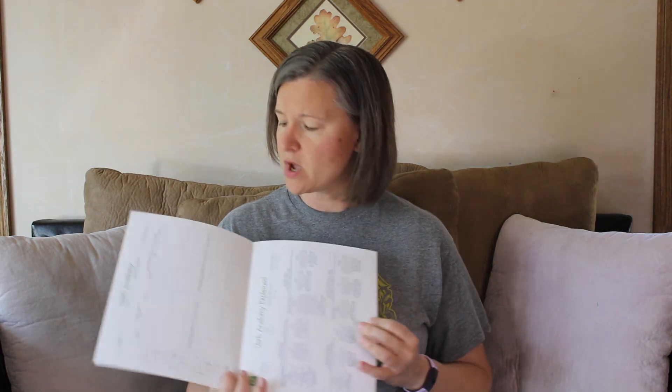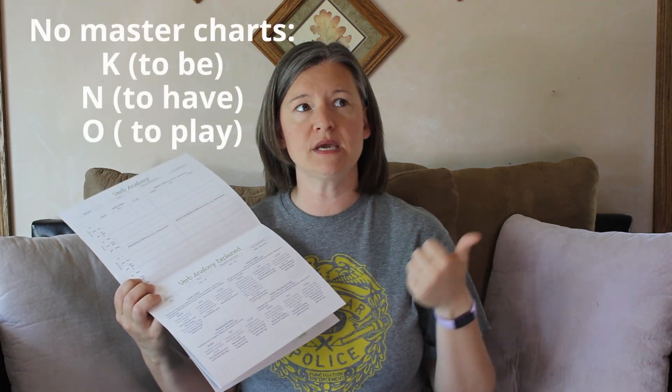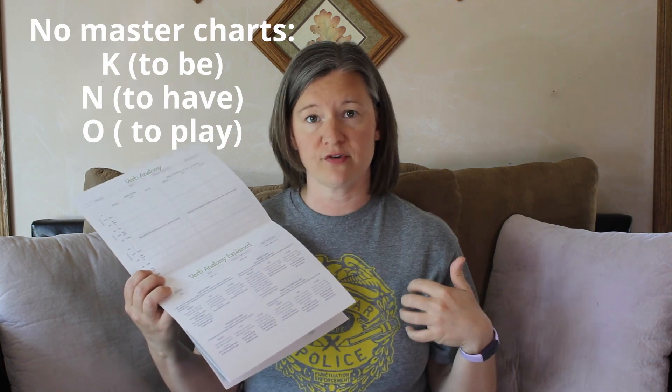If you go back to the front and open it up, we have a blank verb anatomy chart. We don't have a filled-in "to be," "to have," or "to play" in any of the Trivium tables, but this gives you a blank space to do any of those that you want. Opposite of that, it has the verb anatomy explained — this is Chart AA, the advanced chart. It explains what is going into that chart and why we are filling it out that way. You could fill this chart out with any verb. Pick any verb and have your student fill it out. That would definitely be an advanced second or third year student challenge.